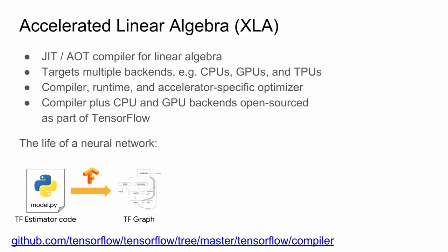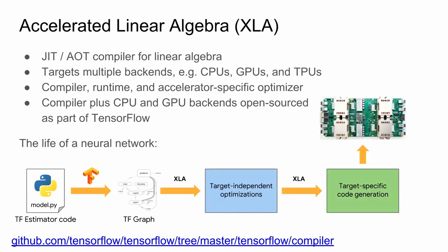Under the covers, for mapping TensorFlow programs onto TPUs or other devices like CPUs and GPUs, we have an accelerated linear algebra system called XLA—essentially a compiler for linear algebra. It targets many different kinds of systems and is both a compiler, a runtime, and has accelerator-specific optimizations. The compiler and CPU and GPU backends are open-sourced on GitHub. You have a model expressed in Python that constructs a TensorFlow graph; that graph is given to XLA, which does target-independent optimizations like algebraic simplifications, then target-specific code generation for the particular device you're running on.